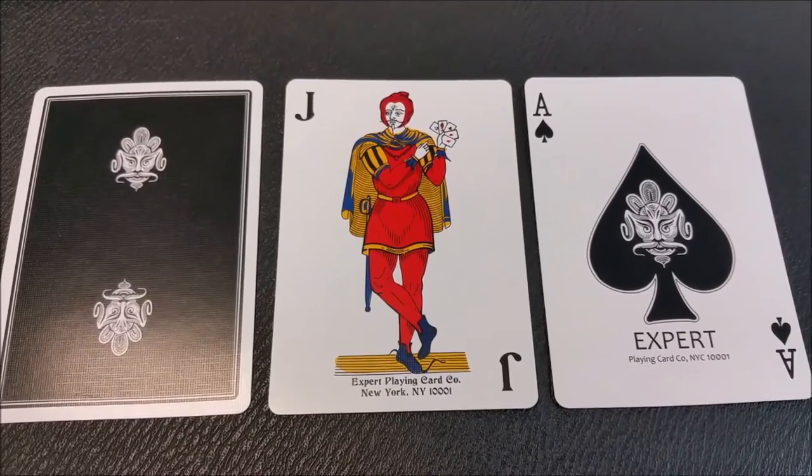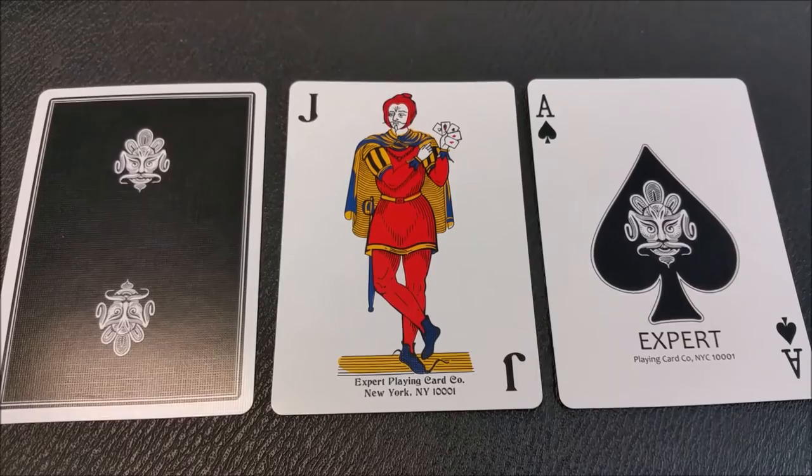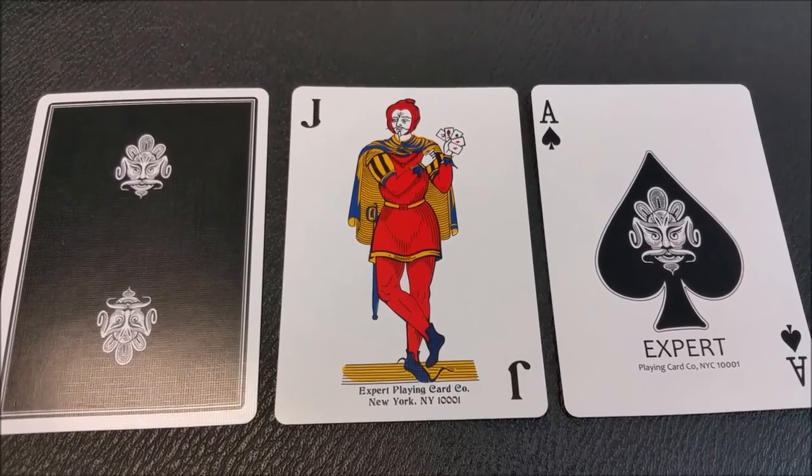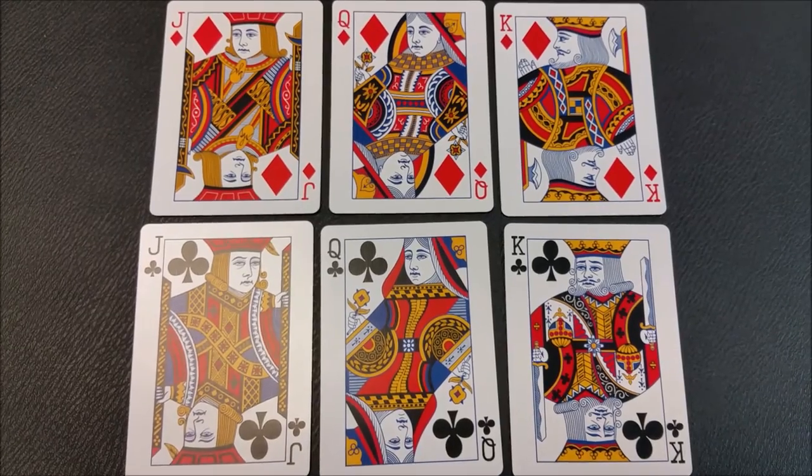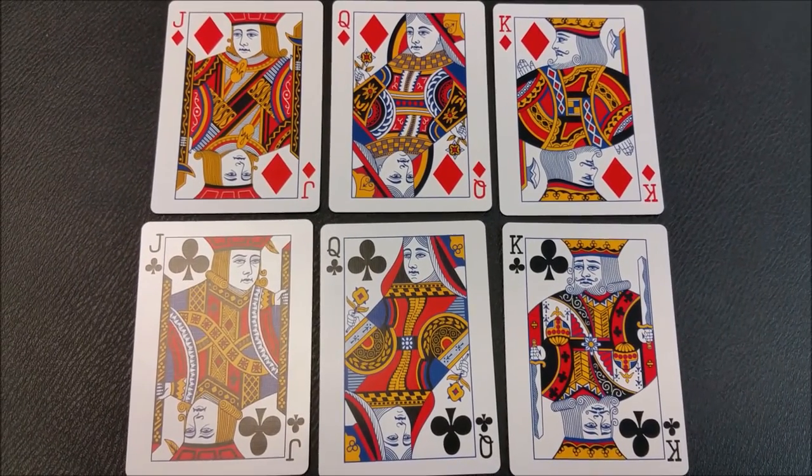Real quick here are a couple of the features of this deck. There's the back design of course, the Joker, the Ace of Spades, and here are the court cards that you get with the Zen Pure deck. As you can see they are the exquisite courts.